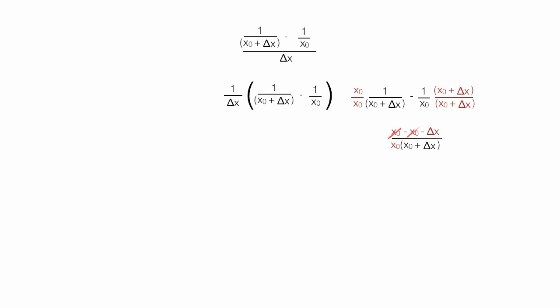The two x0s on the numerator cancel out x0 minus x0. Now I take 1 over delta x times x0 times x0 plus delta x, right there. Now these two delta x's cancel, so I'm left with negative 1 on the numerator.